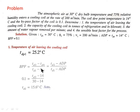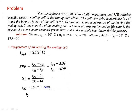The bypass factor formula can be applied as: (Td2 − Td4) / (Td1 − Td4) = (Td2 − ADP) / (Td1 − ADP), where Td2 is the temperature of air leaving the coil. By putting the value of BPF = 0.1, Td1 = 30°C, and ADP = 14°C, we get the temperature of air leaving the system as Td2 = 15.6°C.